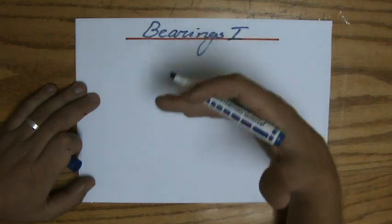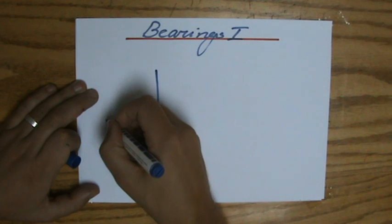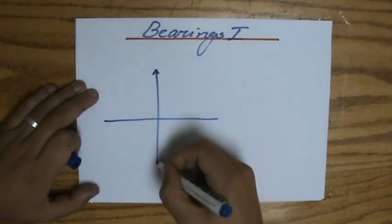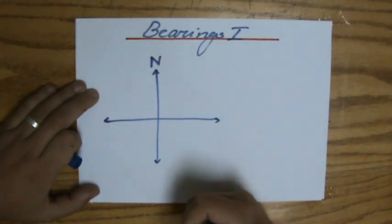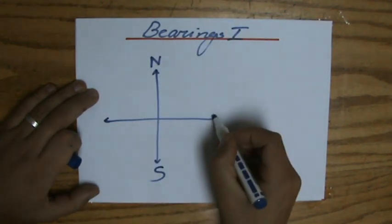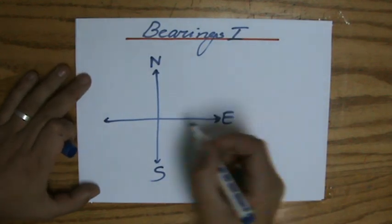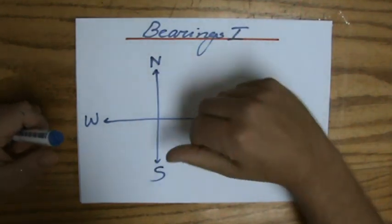So bearings say something about direction and in general if you have a compass rose, then I hope you realize that it's the north and this would be the south, and over there, east, and west.